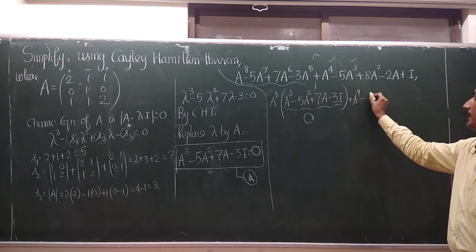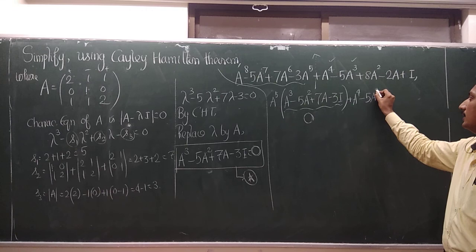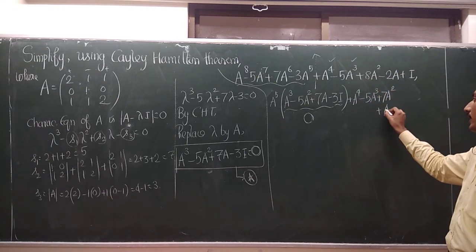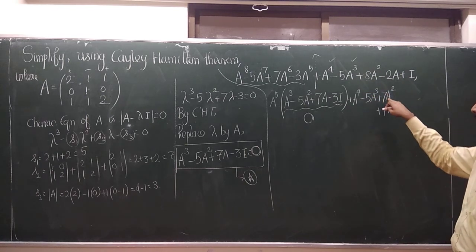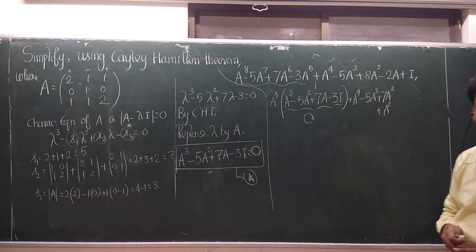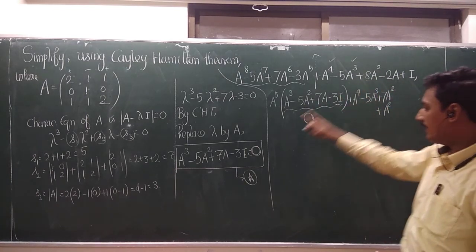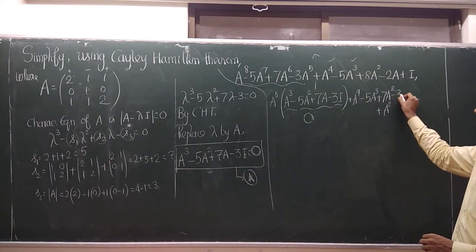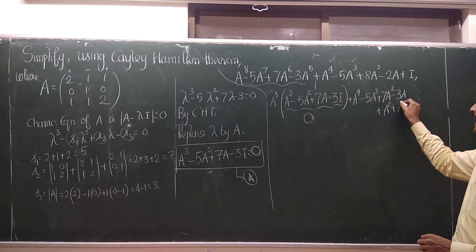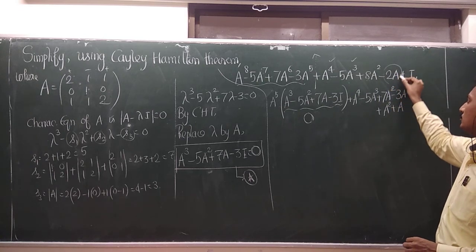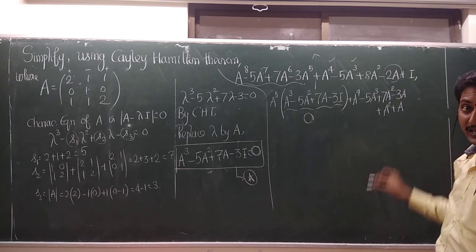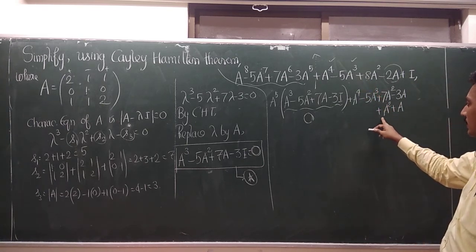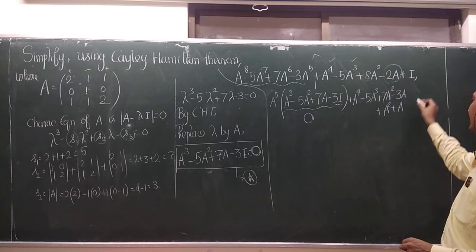I need minus 3 here. Here we have minus 2. So we can rearrange together. This A power 4 minus 5A power 3. Now this 8A square can be written as 7A square plus A square. So then finally I need minus 3. So if it is minus 3A, then when we add plus A, we get minus 2A. So this minus 2A is equal to minus 3A plus A. This plus A square is equal to 7 plus 1. And finally it is I.